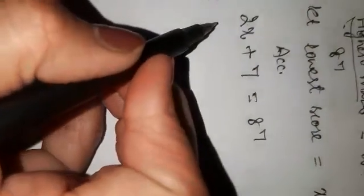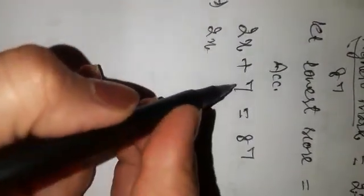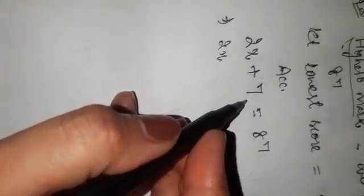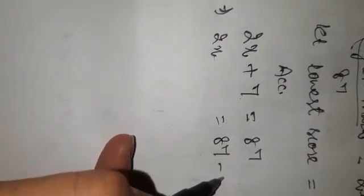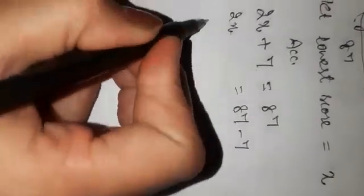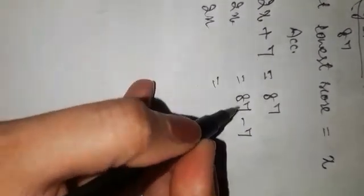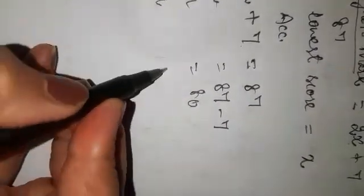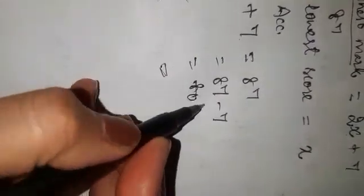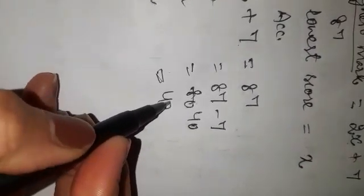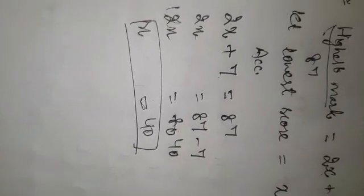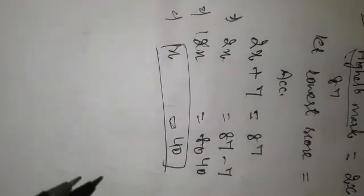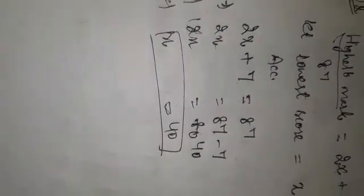2X plus 7 equals 87. We'll keep 2X here and shift the constant 7 to the right-hand side. 87 minus 7 equals 2X. When we subtract 7 from 87, we get 80. X equals 80 divided by 2 equals 40. So the lowest score value is 40.